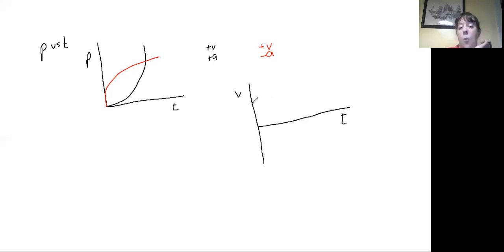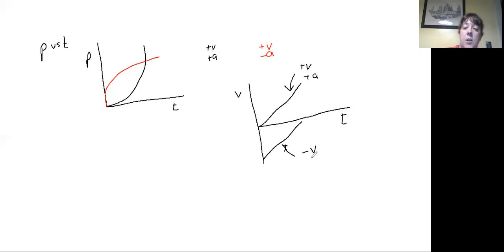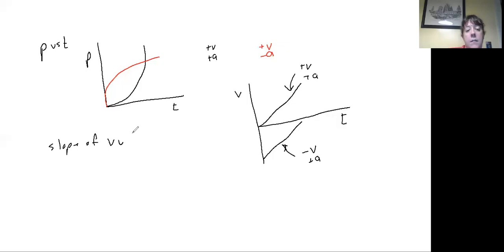On a velocity versus time graph, we know acceleration is taking place when our velocity has a non-horizontal line — sloped upward or downward. The top line I drew has a positive velocity and positive acceleration because the velocity is becoming more positive. The bottom line is a negative velocity but still a positive acceleration, because the slope of the velocity versus time graph equals the acceleration. The slope of a velocity versus time graph equals the acceleration.